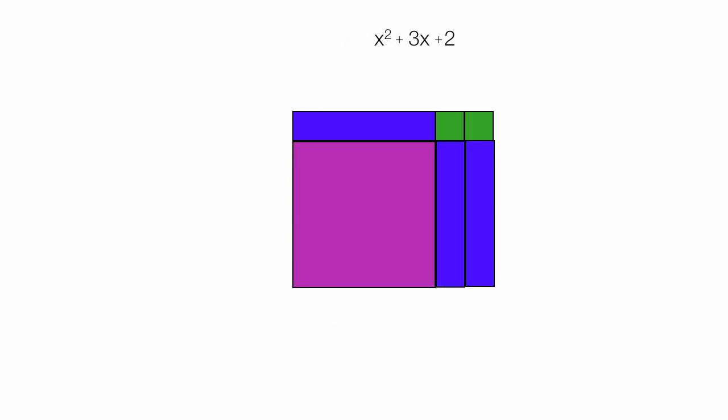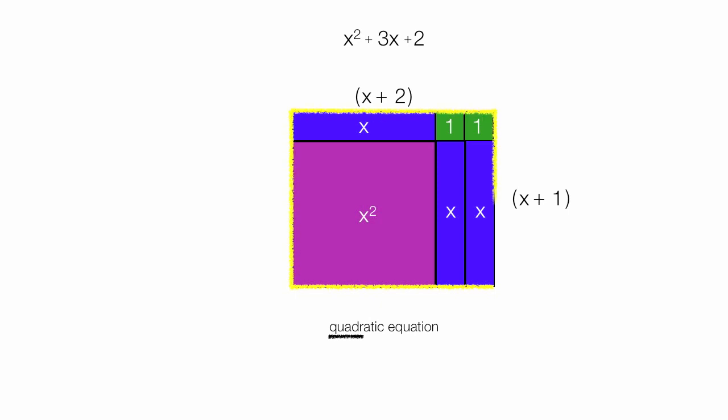Now imagine I add some more tiles, and this is the equation. Again, the area of that rectangle is x squared plus 3x plus 2. If I factored that equation, it would be x plus 2 times x plus 1. This also has four sides, makes it a quadratic equation. 1, 2, 3, 4.